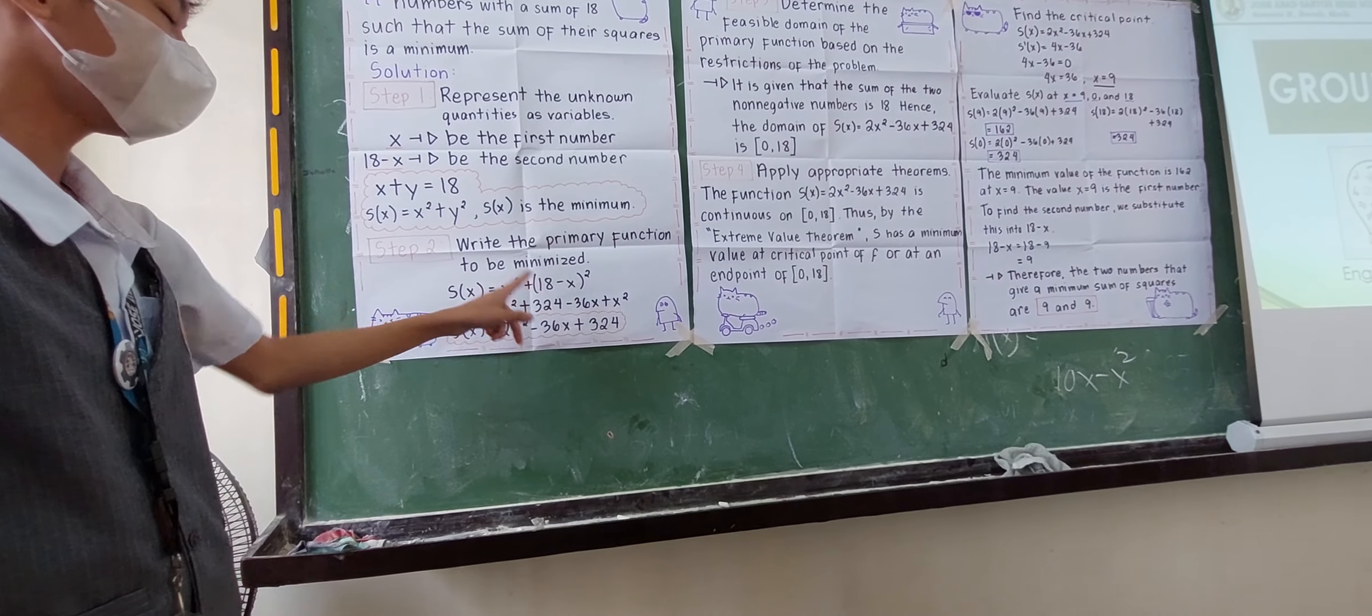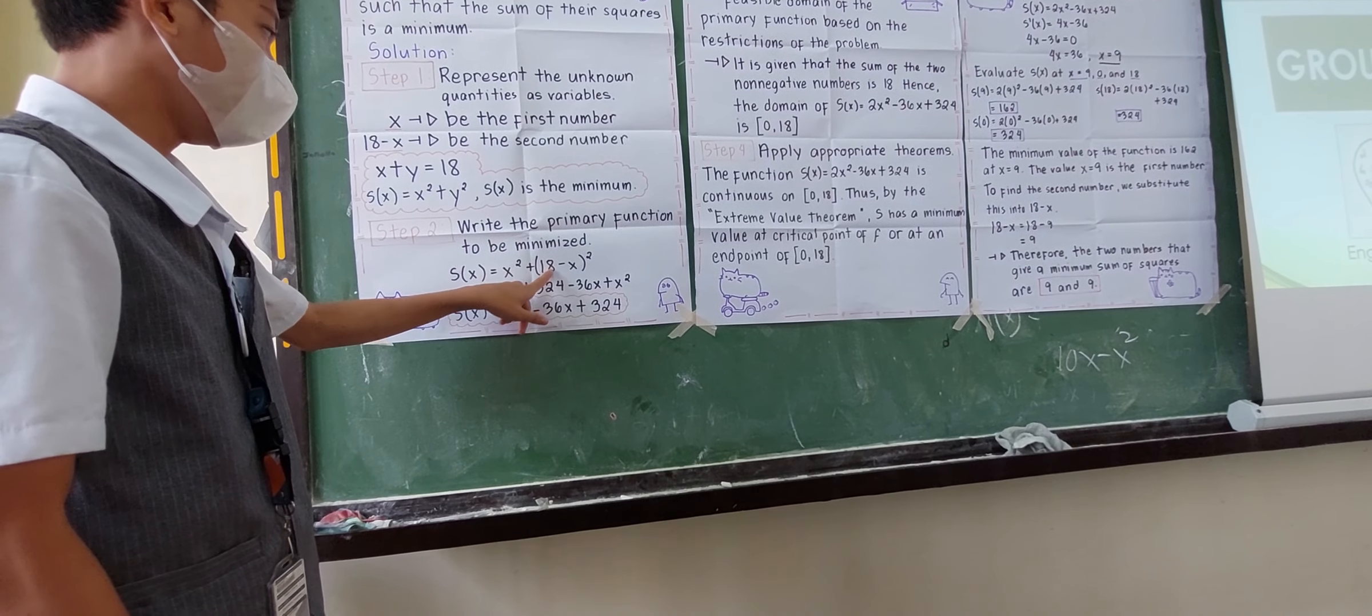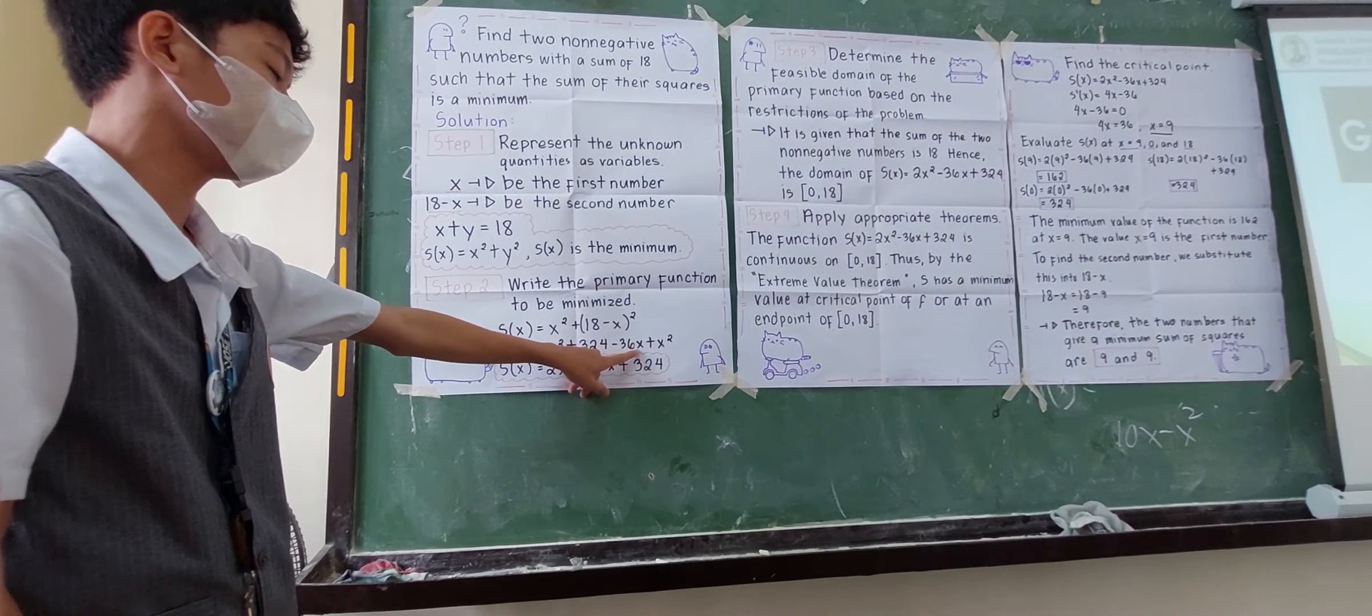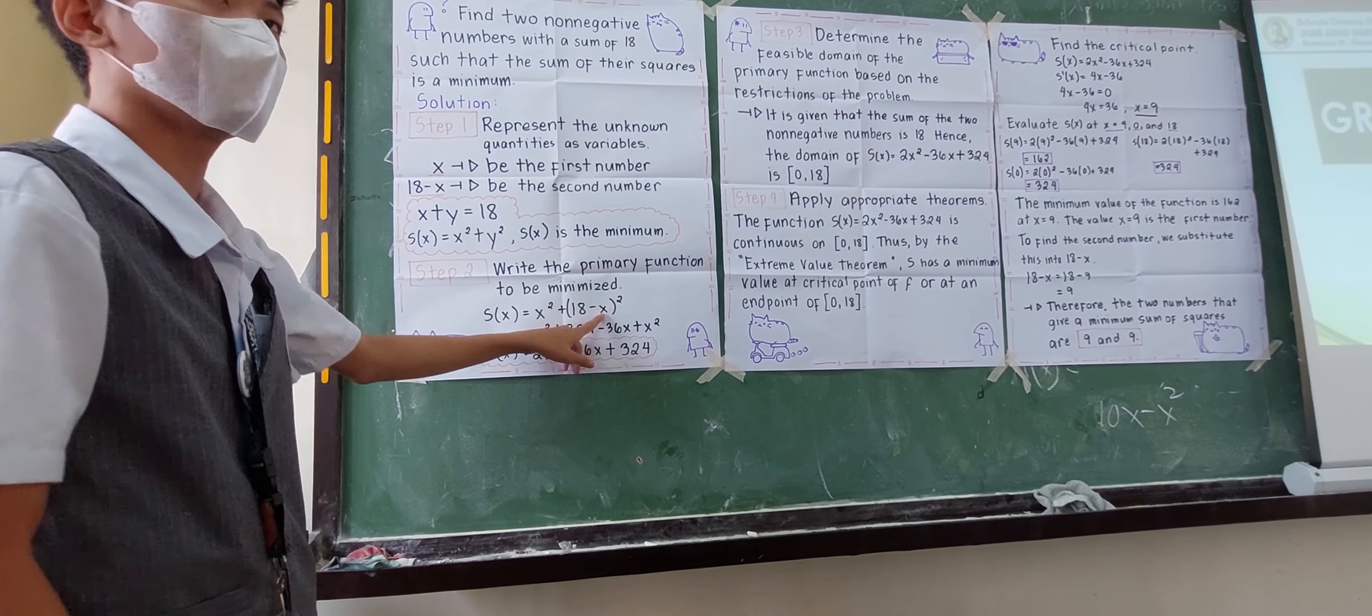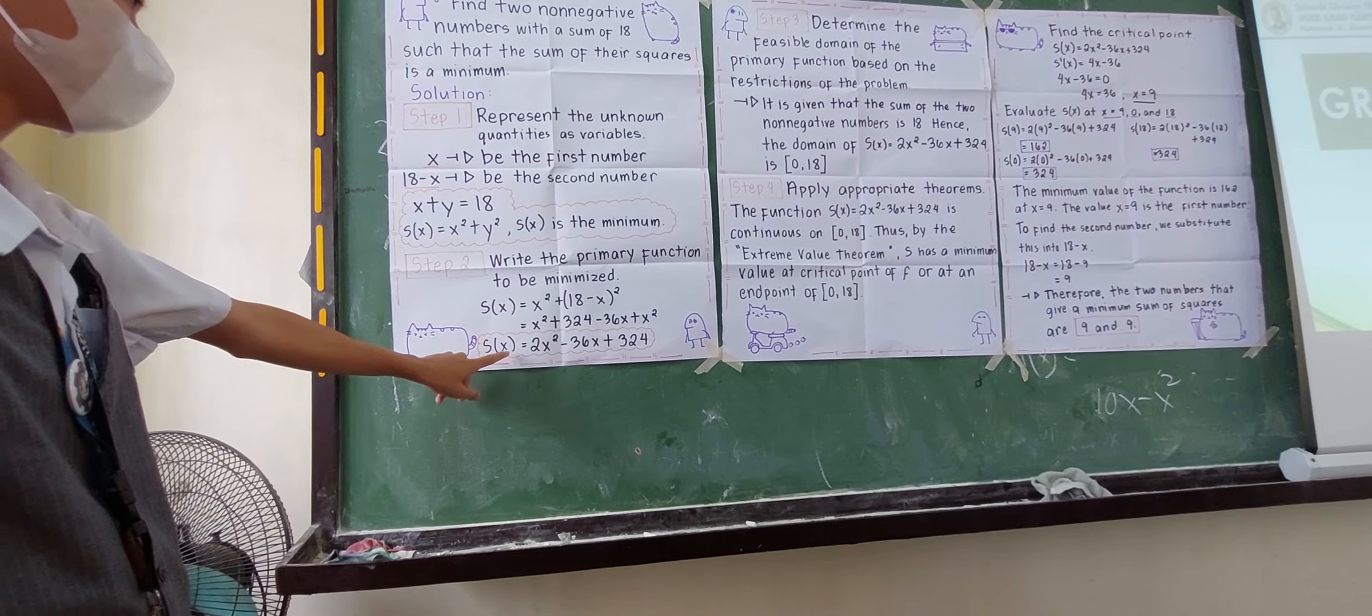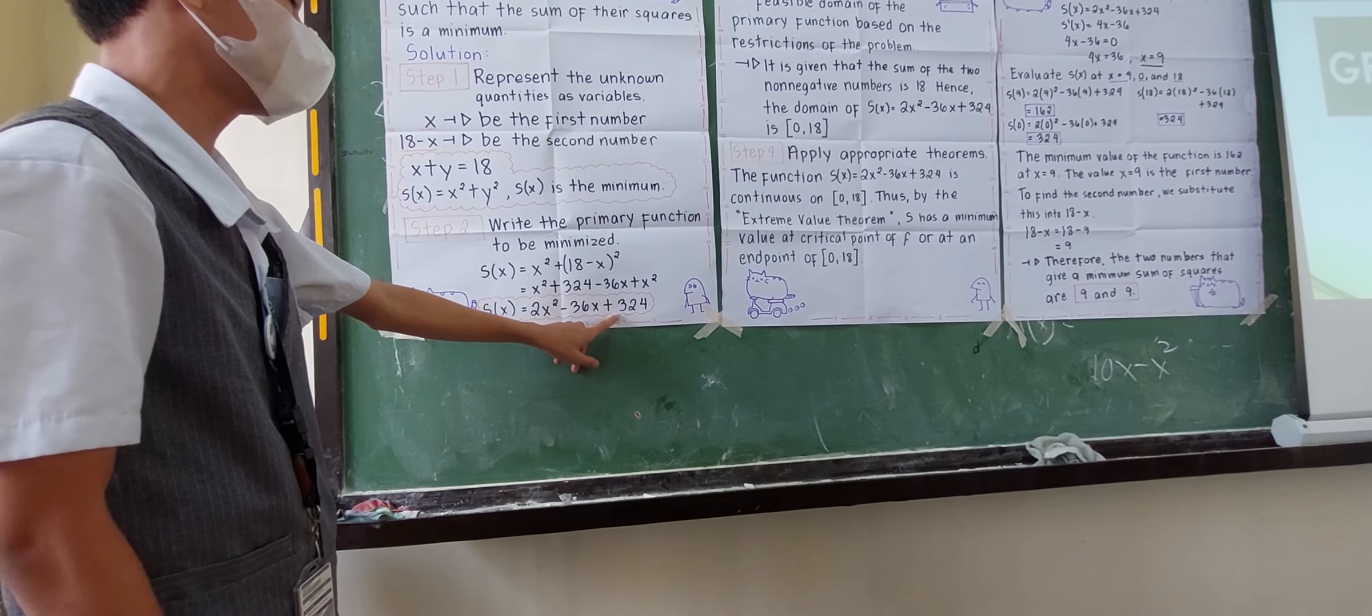18 raised to 2 is equal to 324. 18 times negative X times 2 is equal to negative 36X, plus negative X times negative X is equal to X squared. Therefore, we have S of X is equal to 2X squared minus 36X plus 324.